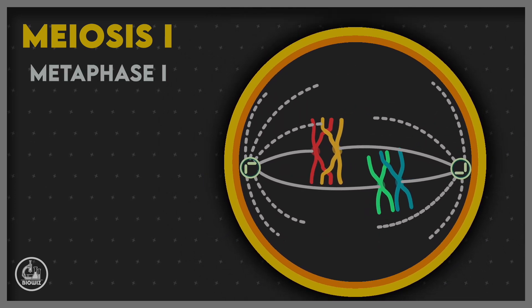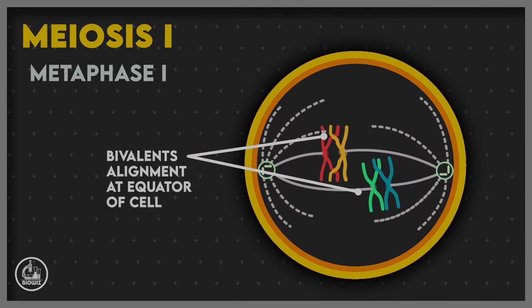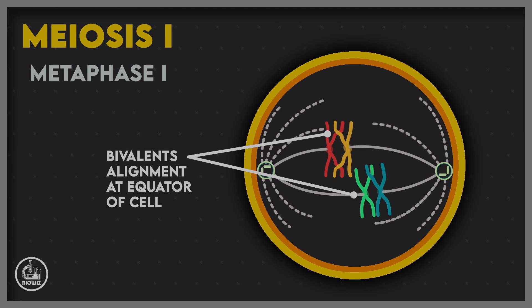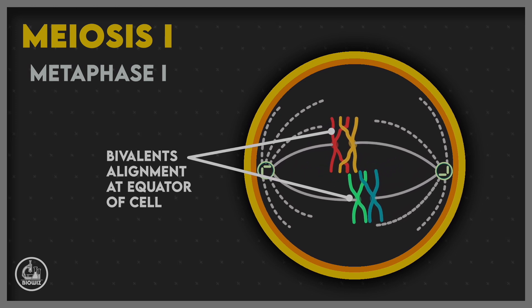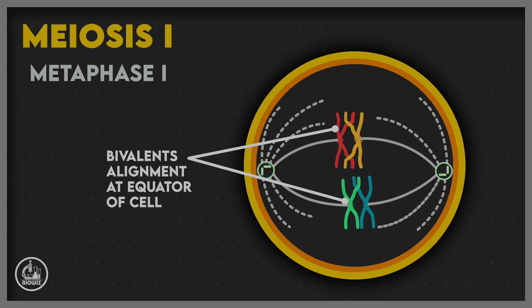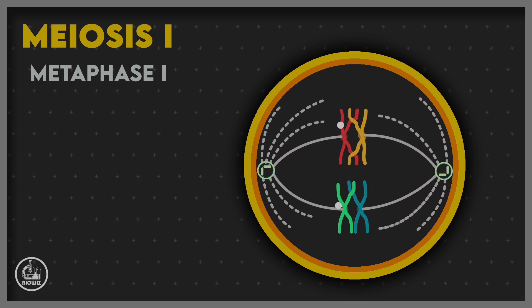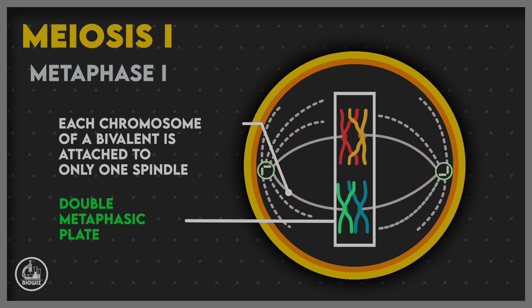After completion of prophase I, metaphase I starts in which the spindle fibers from opposite poles attach to the kinetochores of the bivalents, and all the bivalents are aligned at the equator of the cell. The resulting alignment is called a double metaphase plate.